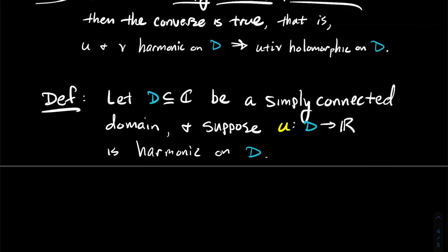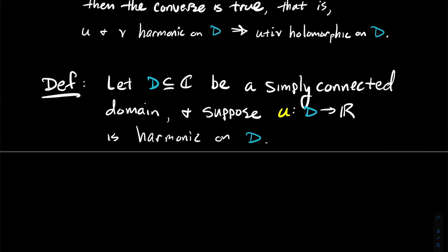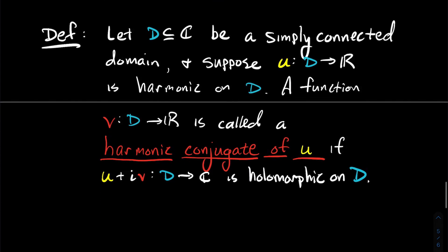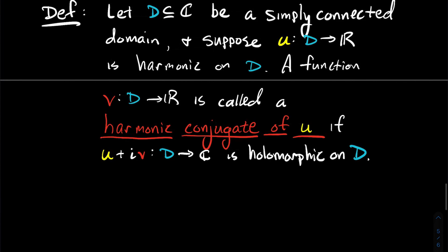Moving along, the next definition: let's say we're in a nice situation with a simply connected domain — a domain with no holes in it. Let U be a harmonic function on D. A function V also defined on D — also a function of two real variables — we're going to call V a harmonic conjugate of U if, when I put them together as U + iV, that defines a holomorphic complex function on D.